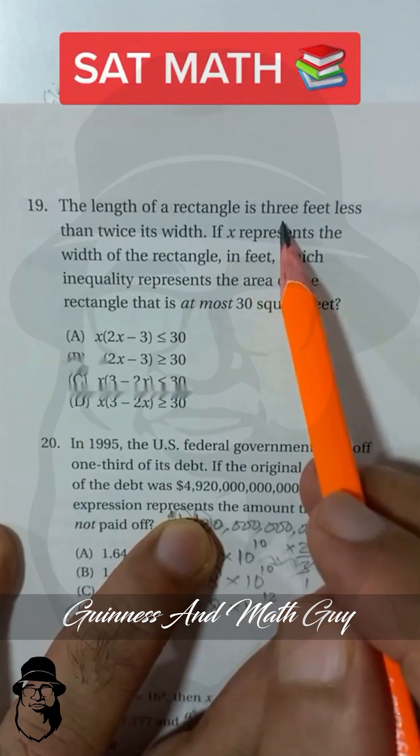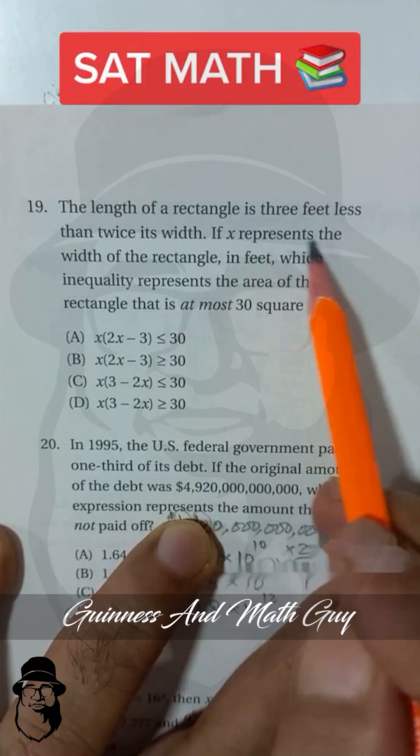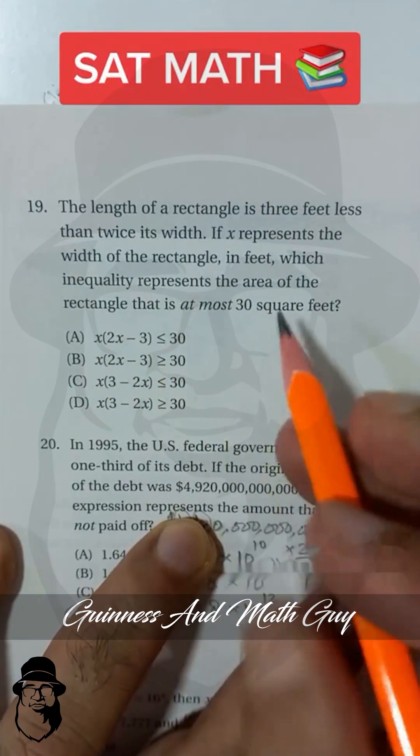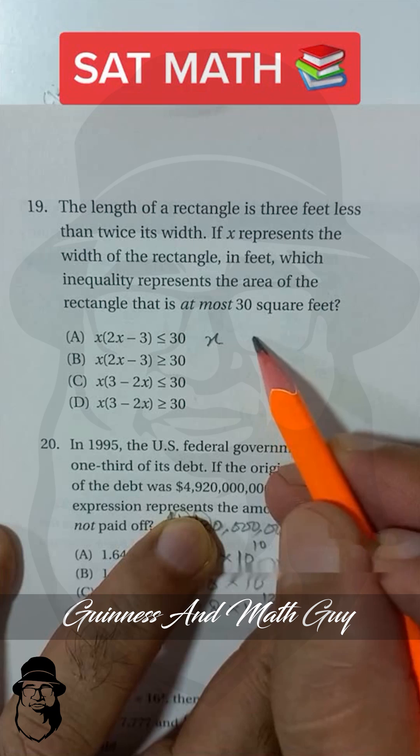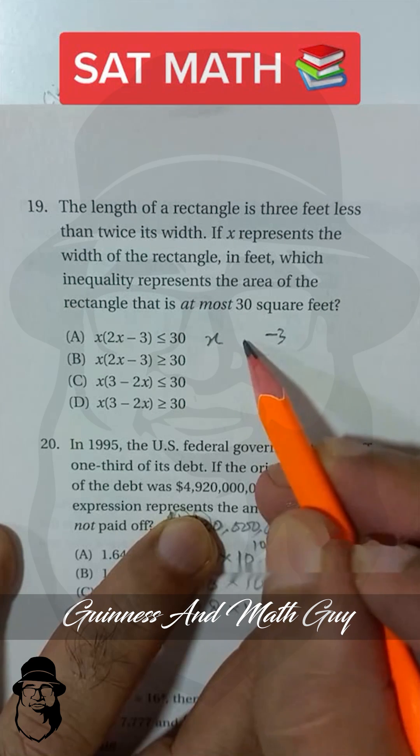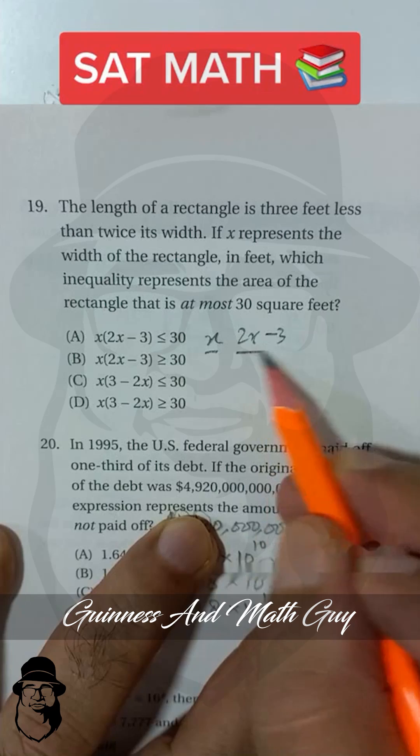The length of a rectangle is 3 feet less than twice the width. If X represents the width of the rectangle, then width is X and length is 3 less than twice of this width. This is the width and this is the length.